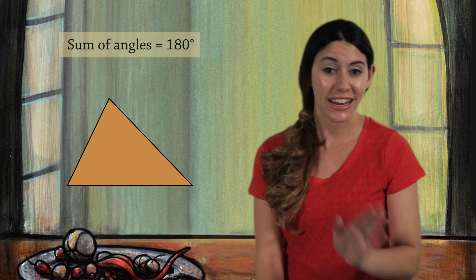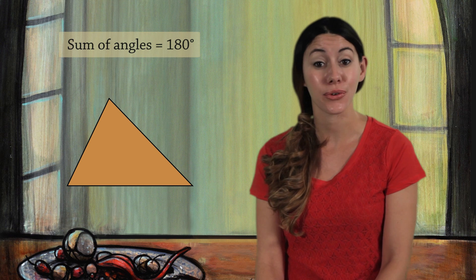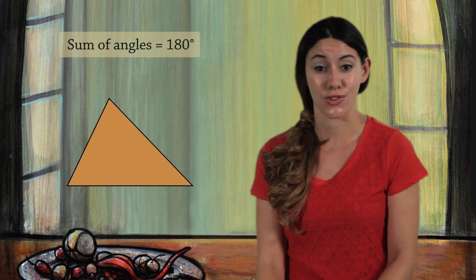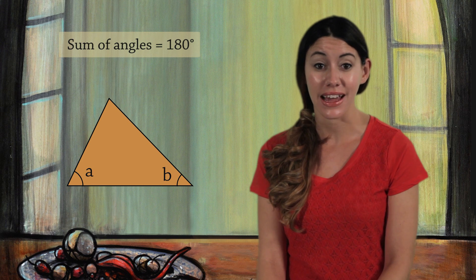The sum of the angles of any triangle is 180 degrees. To see why this is true, first label the angles A, B, and C.